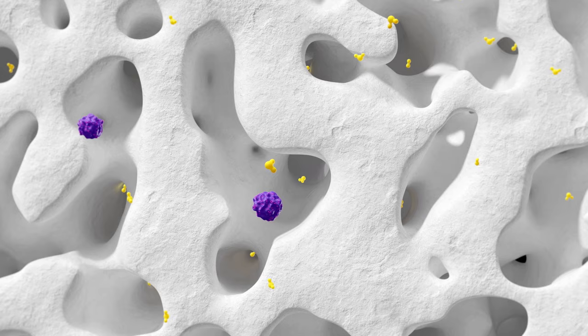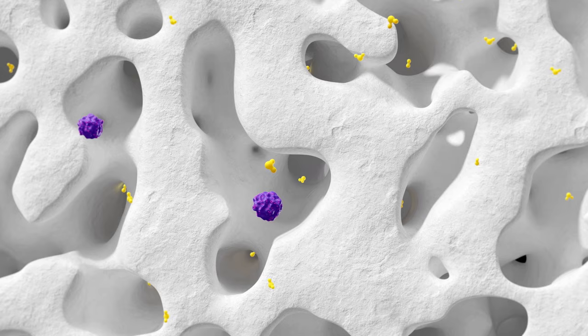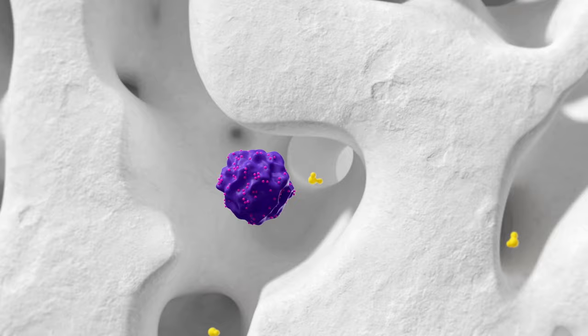Compared to resin chromatography, the network of channels in the monolith has no dead ends or small pores which might trap large biomolecules. In this way, monoliths support their efficient recovery.